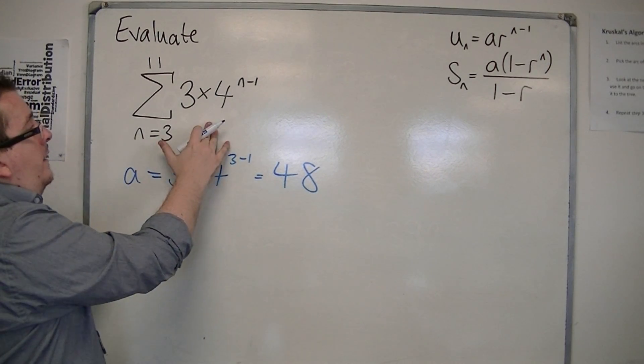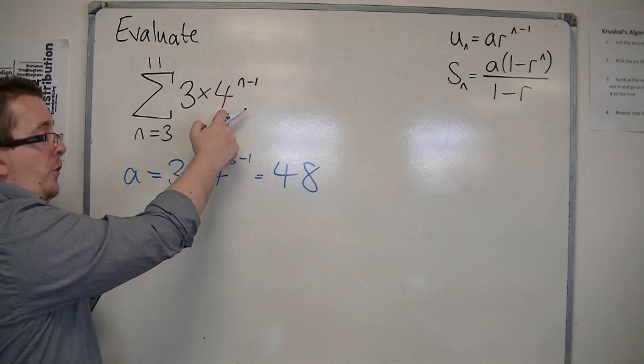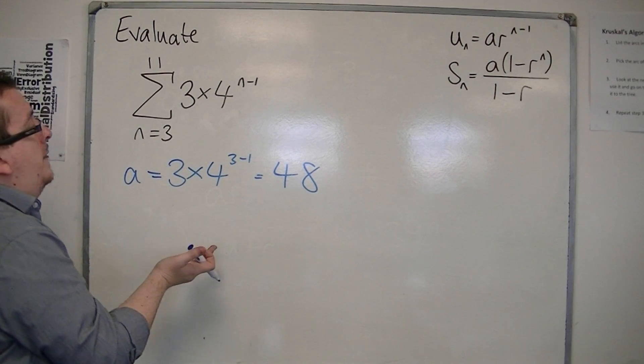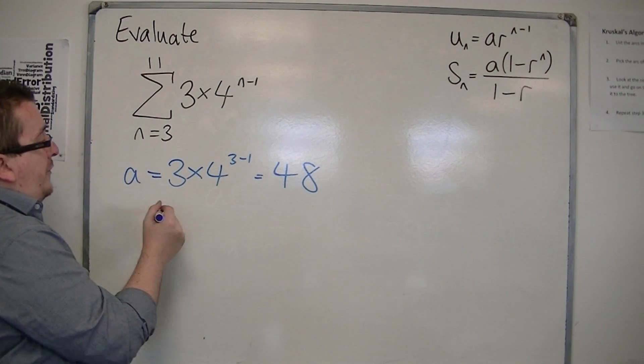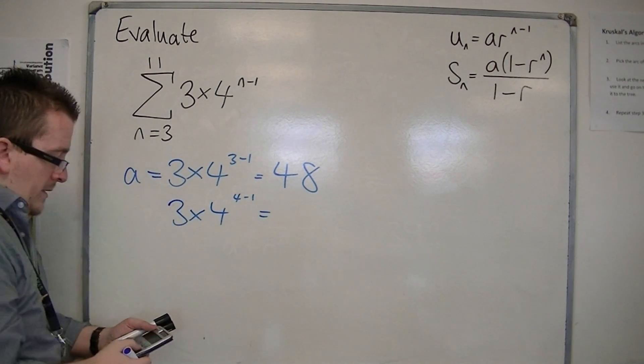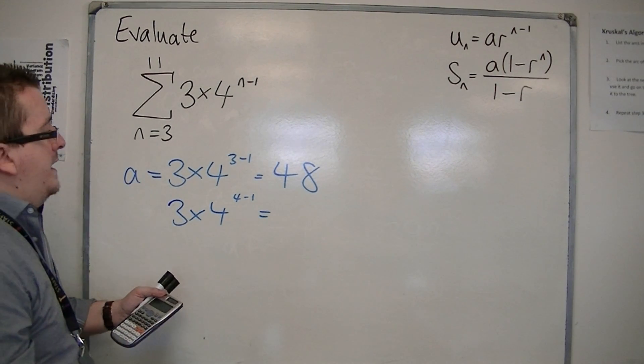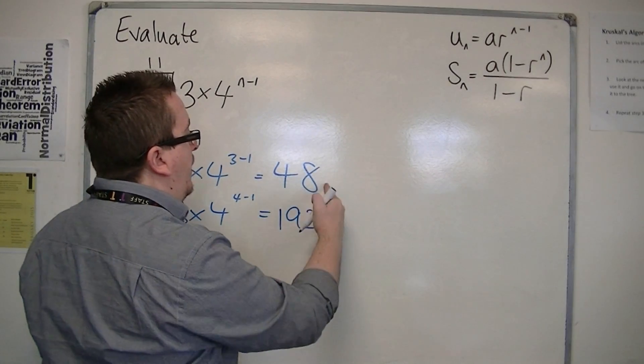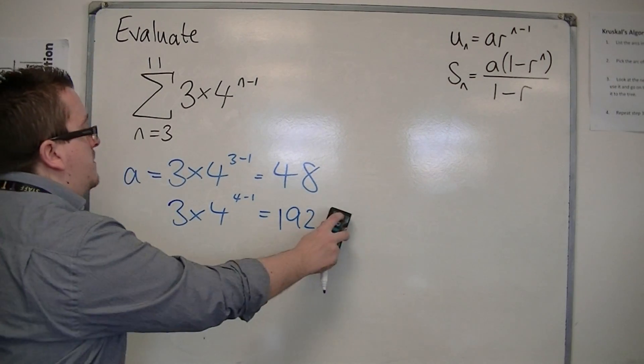Then r can be found. Well, r is going to be four, because I'm multiplying by four each time. That's not changing. The first term is. You can also spot it by going, well, if I look at the second term, three times four to the four minus one, so if I plug that into my calculator, three times four cubed, then I get 192. And 192 divided by forty-eight is four. So r is definitely four.